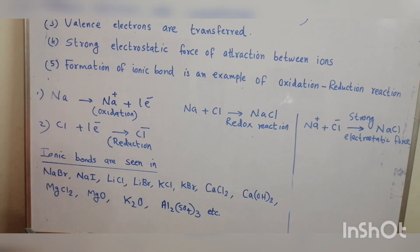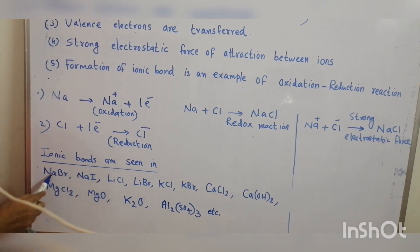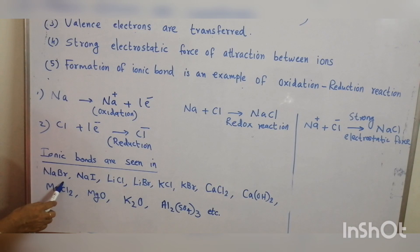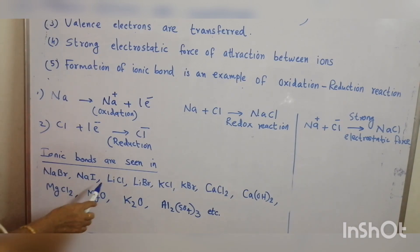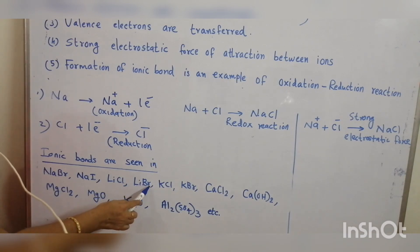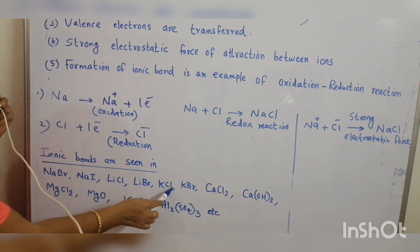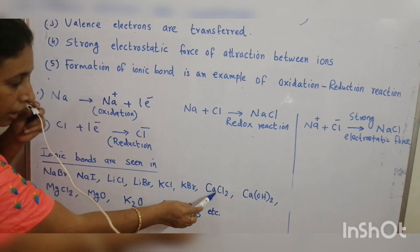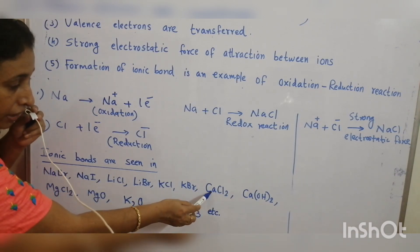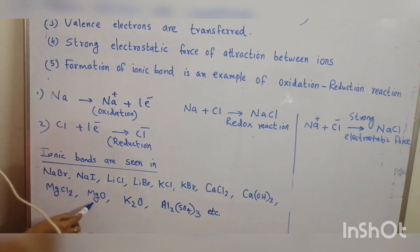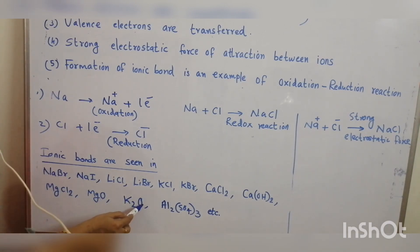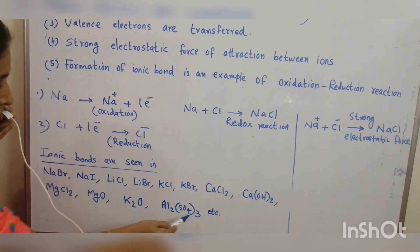Examples of some common ionic compounds are: sodium bromide (sodium is a metal, bromine is a non-metal), sodium iodide (sodium is a metal, iodine is a non-metal), lithium chloride, lithium bromide, potassium chloride, potassium bromide, calcium chloride (calcium is a metal, chlorine is a non-metal), calcium hydroxide, magnesium chloride, potassium oxide and aluminium sulfate.